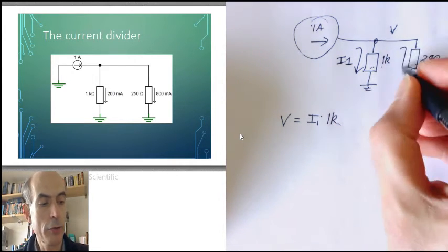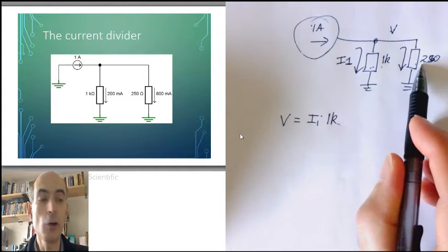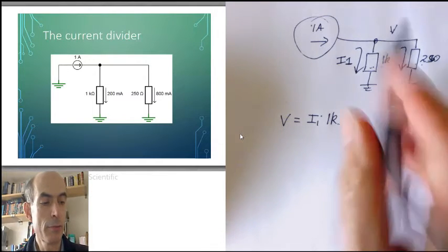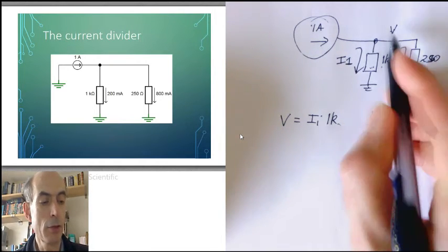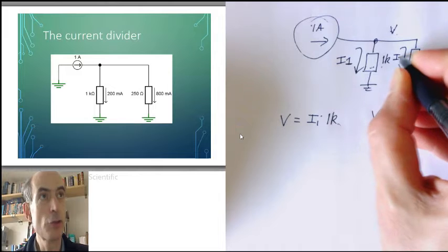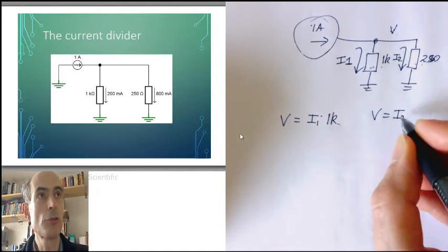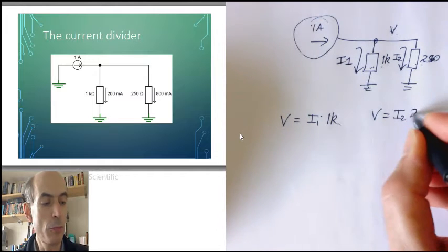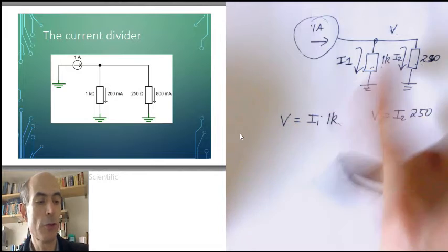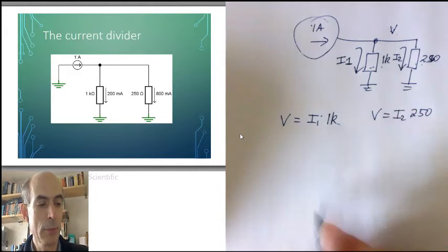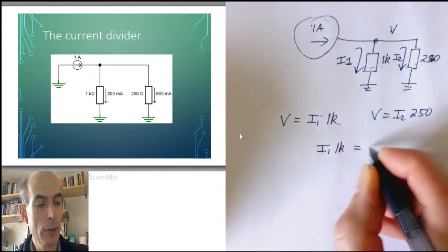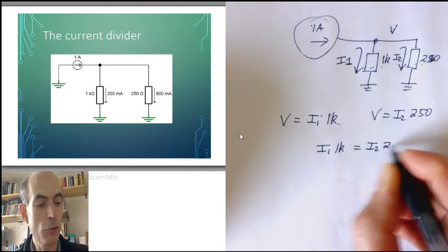And the current flowing down through this 250 ohm resistor, V minus 0, or just V, equals, I'll call this current I2, I2 times, in this case, 250 ohms. But these two voltages must be the same, because they're the voltage of the same point in the circuit. So we can instantly tell that I1 times 1k must be equal to I2 times 250 ohms.